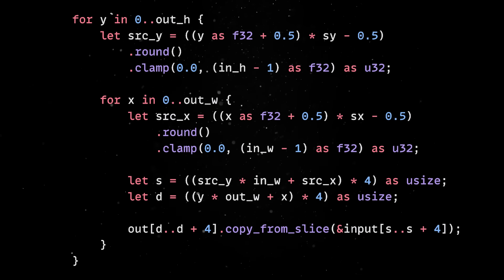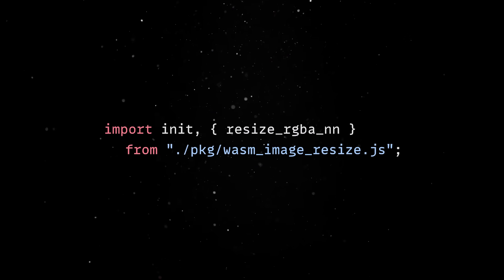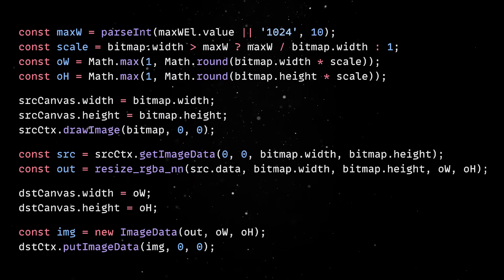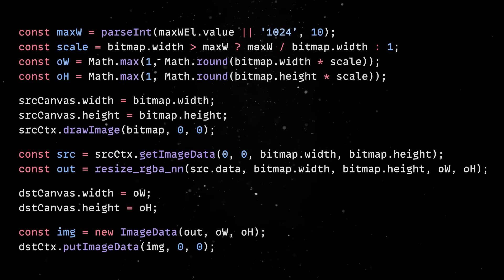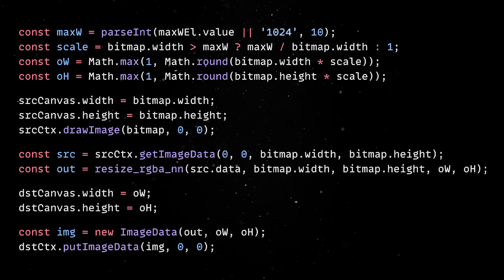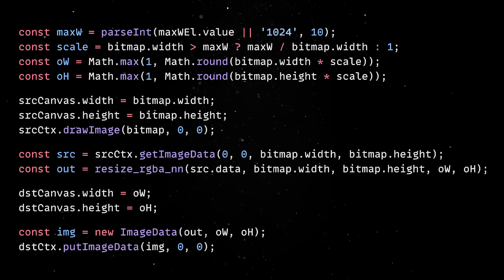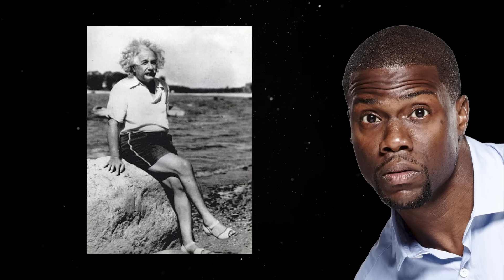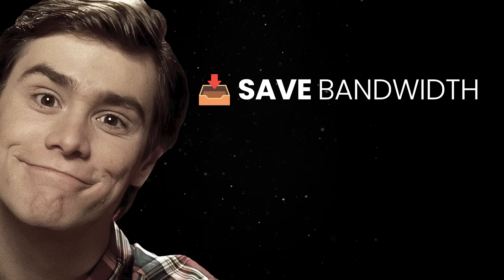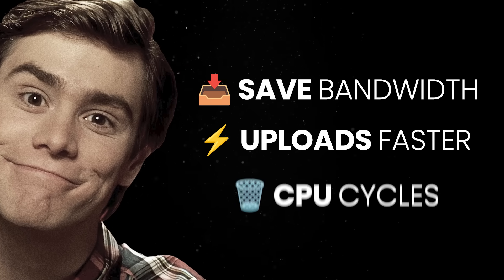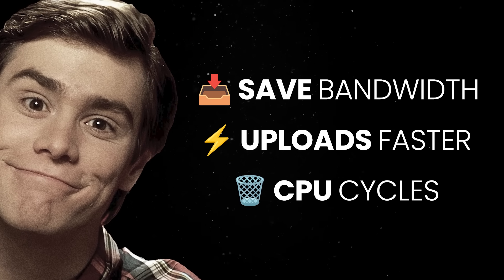Once we compile this library with wasm-pack, we can import it like any other ES module. In the browser, we grab an image from a file input, paint it into a canvas, and then extract the pixel data. That pixel buffer gets passed directly to our Rust function, which scales it down to the target resolution and hands back a new array of pixels. In practice, this means your users can upload a 5MB photo straight from their phone and the browser quietly trims it down to, say, 1MB before it ever hits your server. You save bandwidth, uploads finish faster, and your backend doesn't have to waste CPU cycles doing basic image preprocessing.